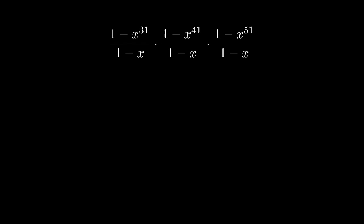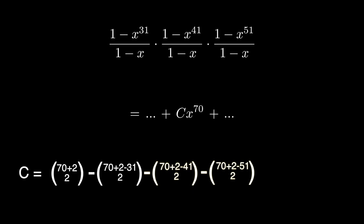So now we can write our product as this. The bottom can be expanded by the binomial theorem. And remember that we are only interested to know the coefficient of x to the 70th. So this is why generating functions are important. They ease the computation.